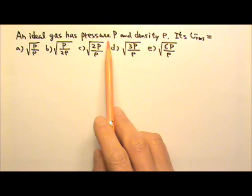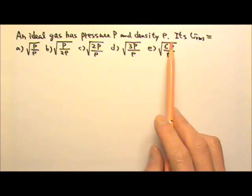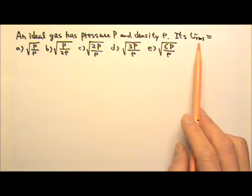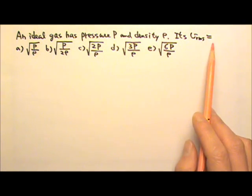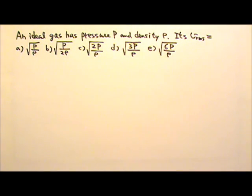An ideal gas has pressure p and density rho. Its root mean square speed equals to which of these?